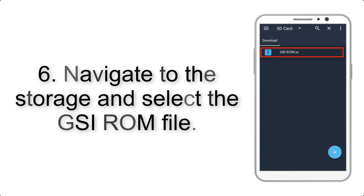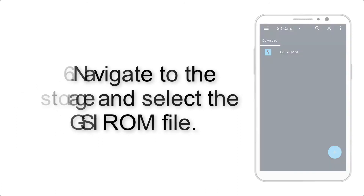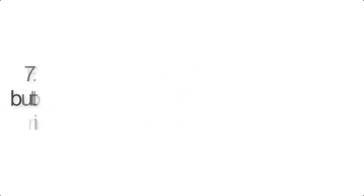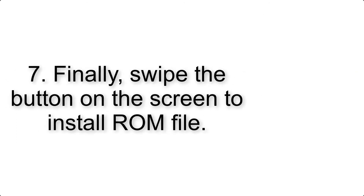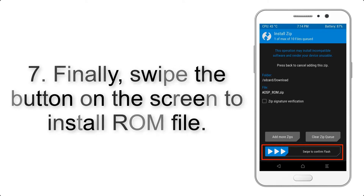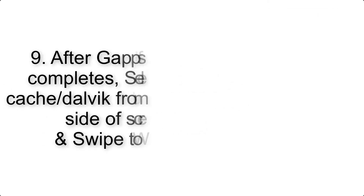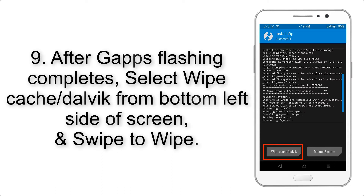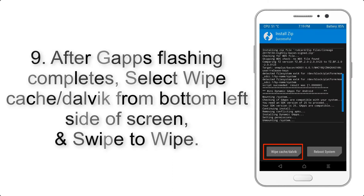Step 5: Go back to the recovery main screen and tap on the Install button. Step 6: Navigate to the storage and select the GSI ROM file. Step 7: Swipe the button on the screen to install the ROM file. Step 9: After GApps flashing completes, select Wipe Cache and Dalvik from the bottom left side of the screen.